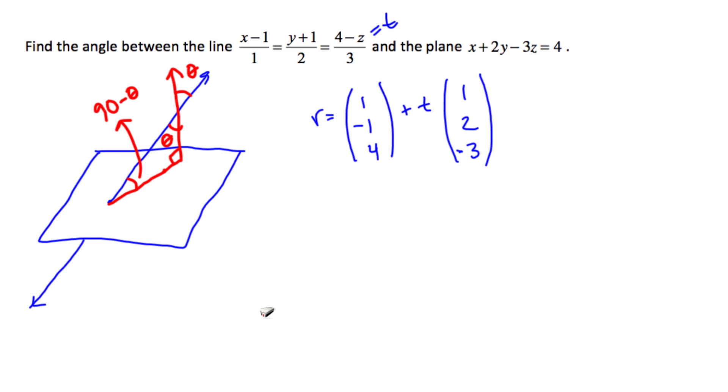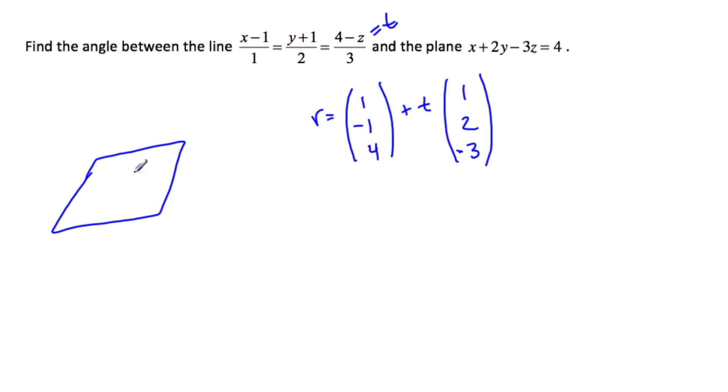I'll just redraw my diagram. We have a plane, a pretty poor plane. Here's our normal vector, 1, 2, minus 3. Here's our line, has a direction of 1, 2, minus 3.